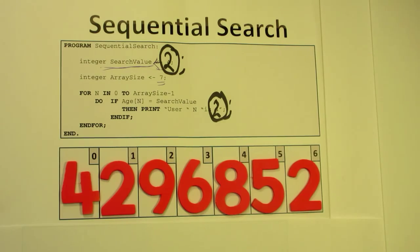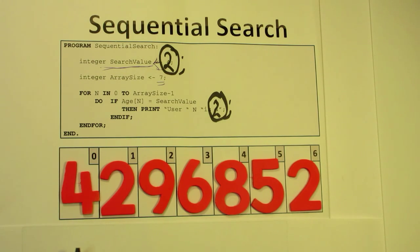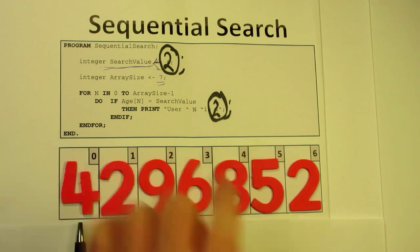As the algorithm shows here, if we're looking for the number two and we want to print out every instance of the number two we find, we start at the first element of the array which is indexed as zero. If that's the number two we print it out, or we print out the location of it, which is not.